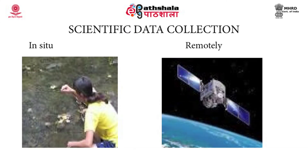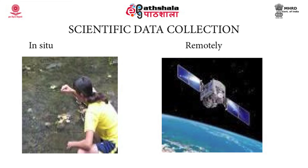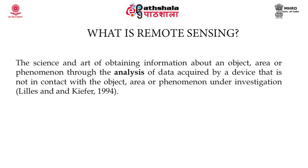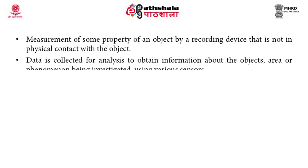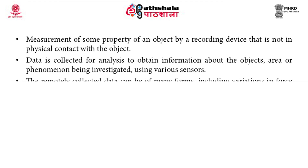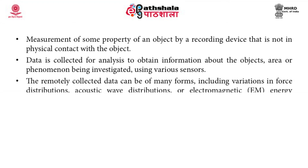Data collection by any scientific process can be done in two ways. First is in-situ, where we go to the ground and collect the information. The second is remotely, where the data information is collected without any physical contact with the object. Remote sensing is the science and art of obtaining information about an object, area or phenomena through the analysis of data acquired by a device that is not in contact with the object, area or phenomena under investigation. Data is collected for analysis to obtain information about the objects, area or phenomena being investigated using various sensors.